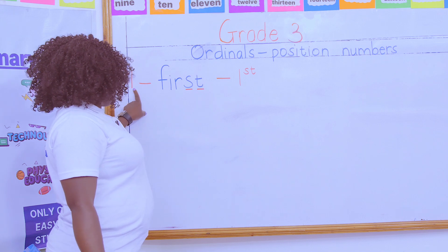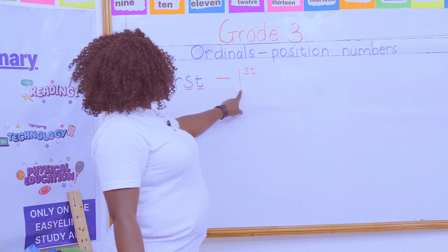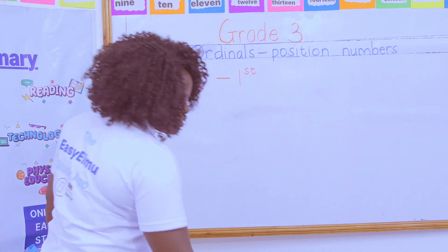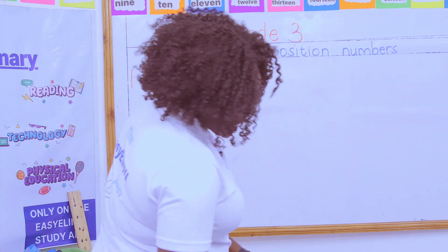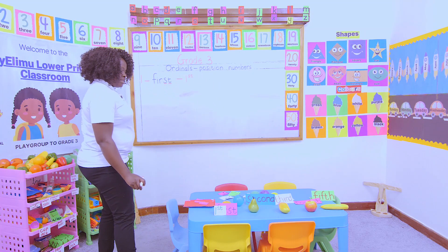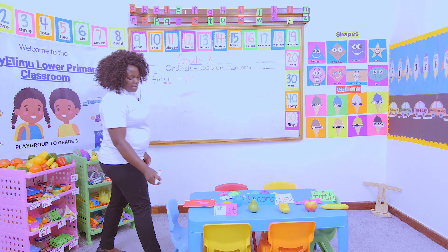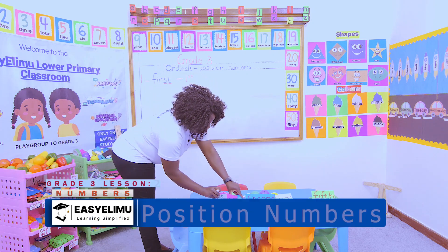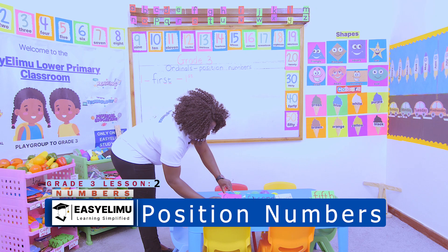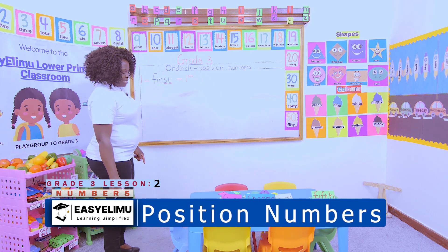You take the number and the last two letters in the word and you form the symbol. So for example, the orange was first. If I wanted to write 'first' in the short form, that is exactly how it will look like — 1st. Orange was first, and when I want to write 'first' in the symbol manner, I will just take 1 and 'st.'